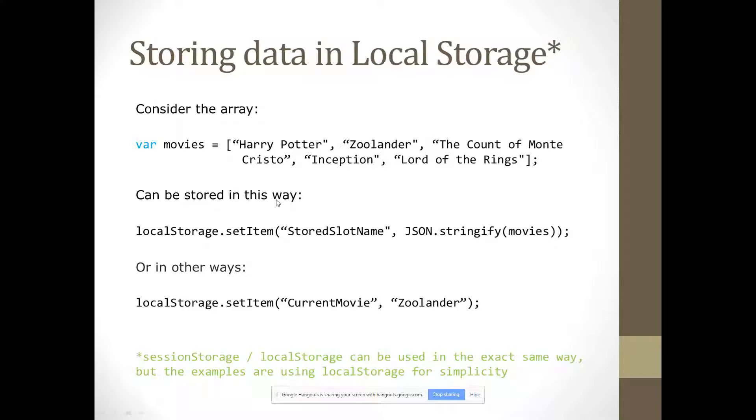So, we have this array of movies, and it can be stored in the local storage by doing localStorage.setItem. That right there is our main thing for storing things in the local storage. localStorage.setItem, and then brackets stored slot name. This is whatever we want to call the section where this is going to be stored. And then just do that JSON.stringify thing that Julio covered last week.